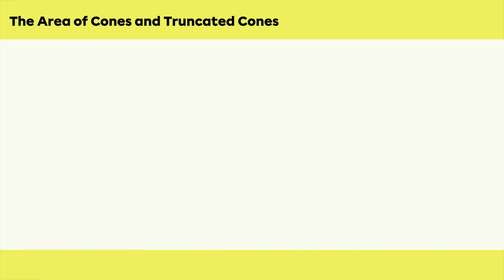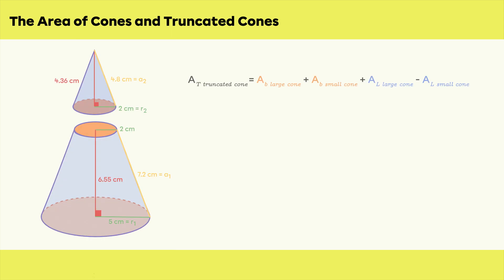Based on these elements, we determine the following formula: the truncated cone's total area is equal to the large cone's base area plus the small cone's base area plus the large cone's lateral area minus the small cone's lateral area.